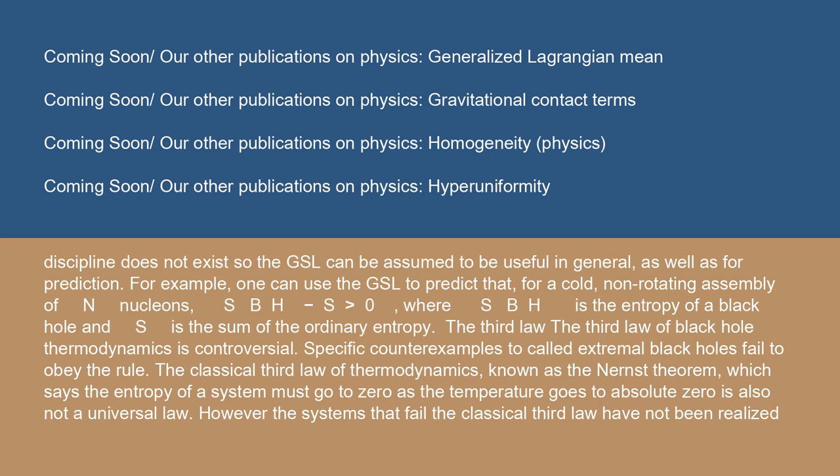For example, one can use the GSL to predict that for a cold, non-rotating assembly of N nucleons, S_BH minus S greater than zero, where S_BH is the entropy of a black hole and S is the sum of the ordinary entropy.